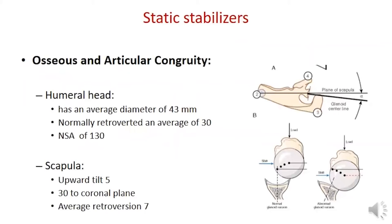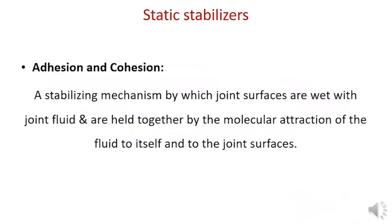The osseous and articular congruity contributes to static stabilization by directing the net reaction force of the joint towards the glenoid arc. The adhesion-cohesion mechanism also contributes to static stabilization through the molecular attraction of the fluid to itself and to the joint surfaces.